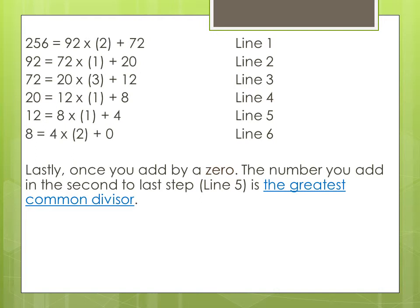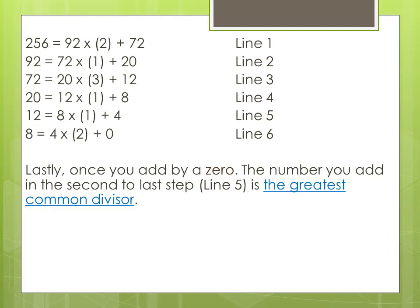Finally once you add by 0 the number that is added in the second to last step, in this case line 5, is the greatest common divisor. Thus the greatest common divisor of 256 and 92 is 4.